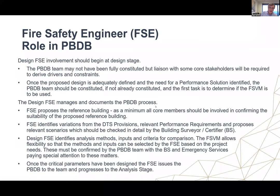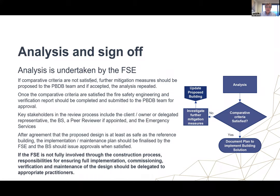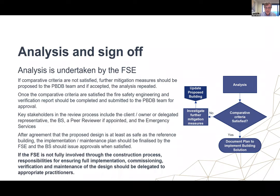The next step is analysis and sign-off. If everything has been done well at the performance-based design brief stage, this is relatively straightforward — do the comparative criteria, make sure they're satisfied, and document your plan. If the comparative criteria aren't satisfied, you'll have to investigate further mitigation methods, update the proposed building, and loop through the process. A key thing here: if the FSE is not going to be fully involved through the construction process, responsibilities for ensuring full implementation, commissioning, verification, and maintenance of the design should be delegated to appropriate practitioners. The FSVM is verification of the design, but there's no point in doing a design if it's not going to be implemented properly.